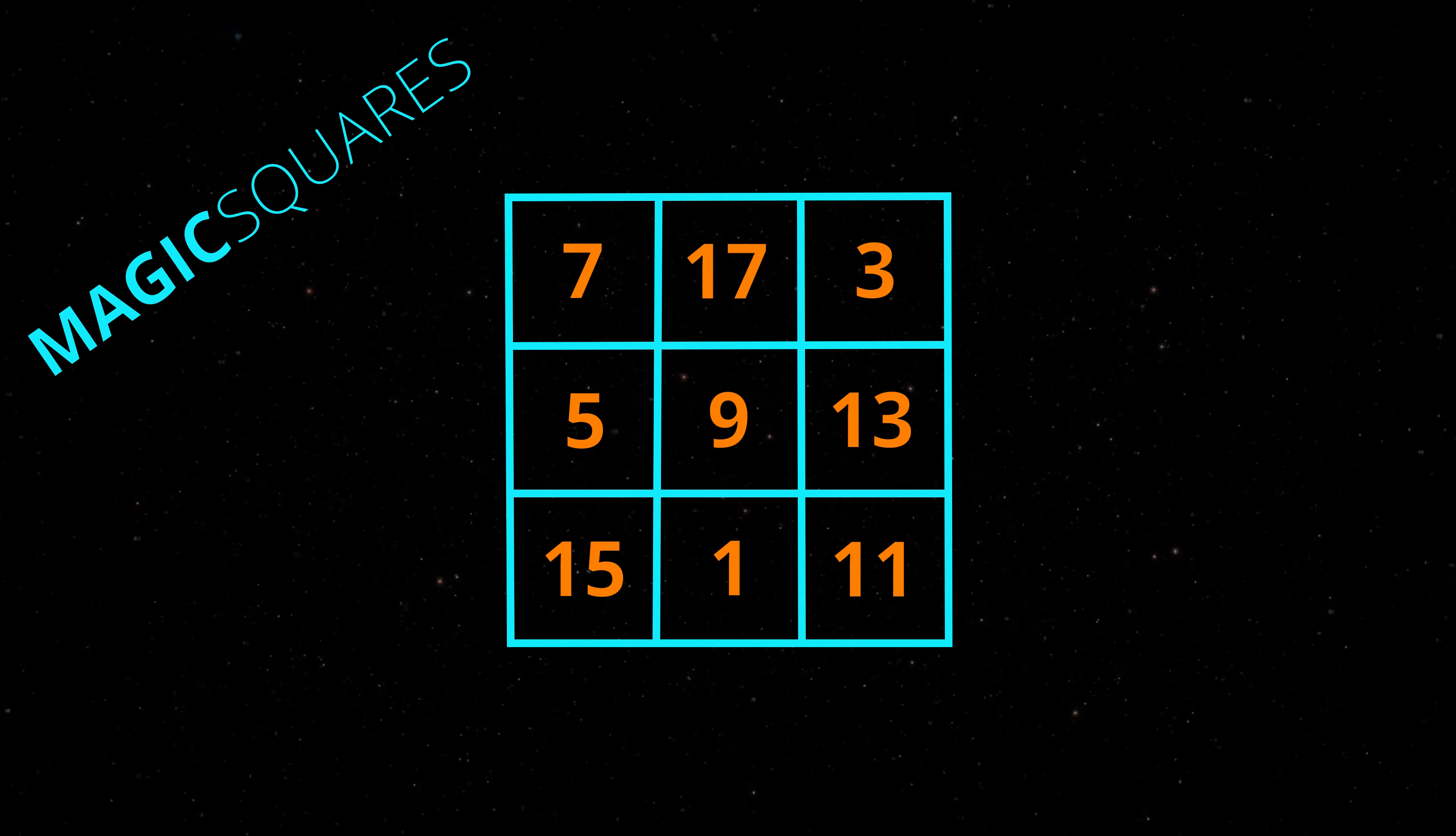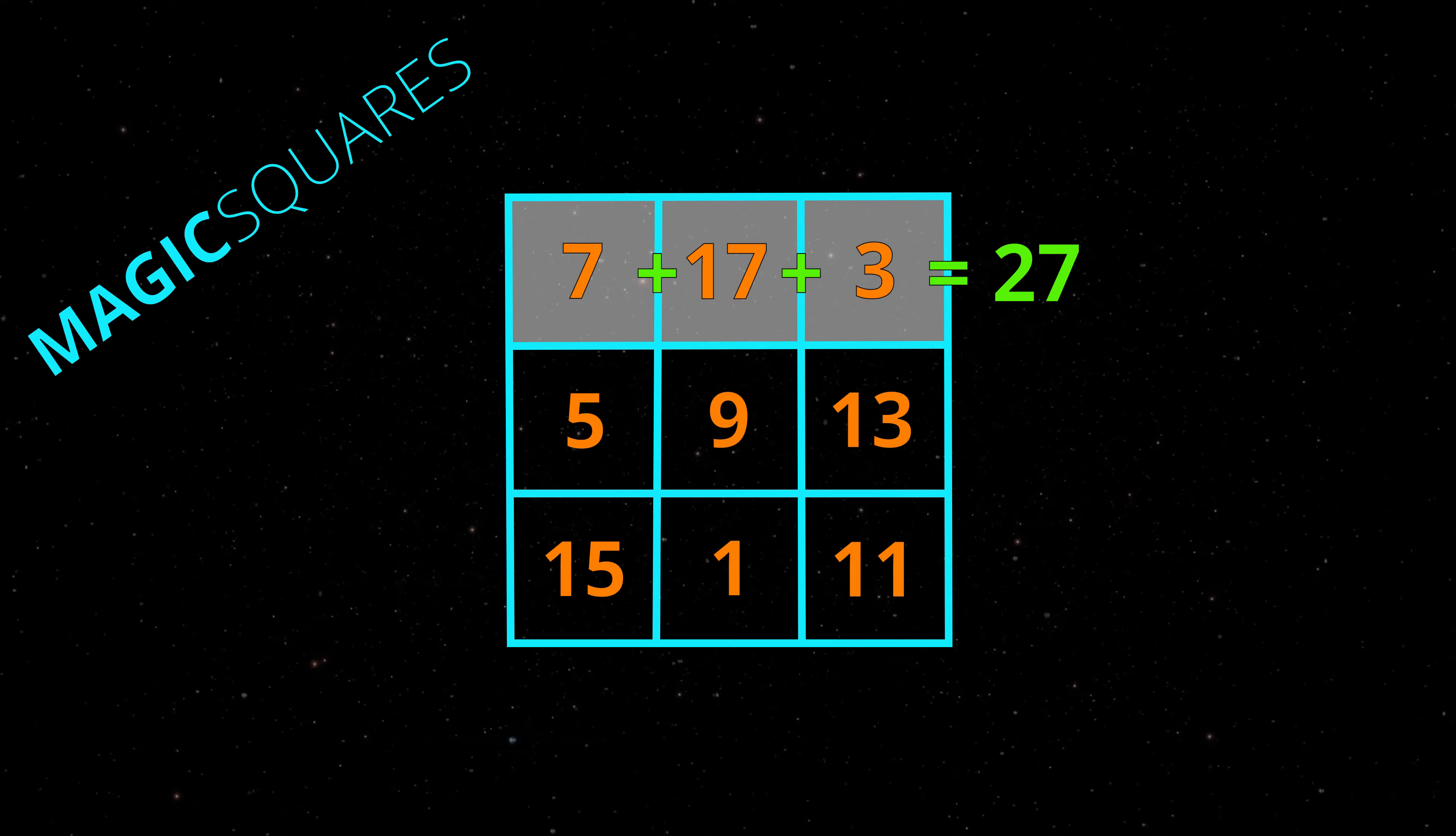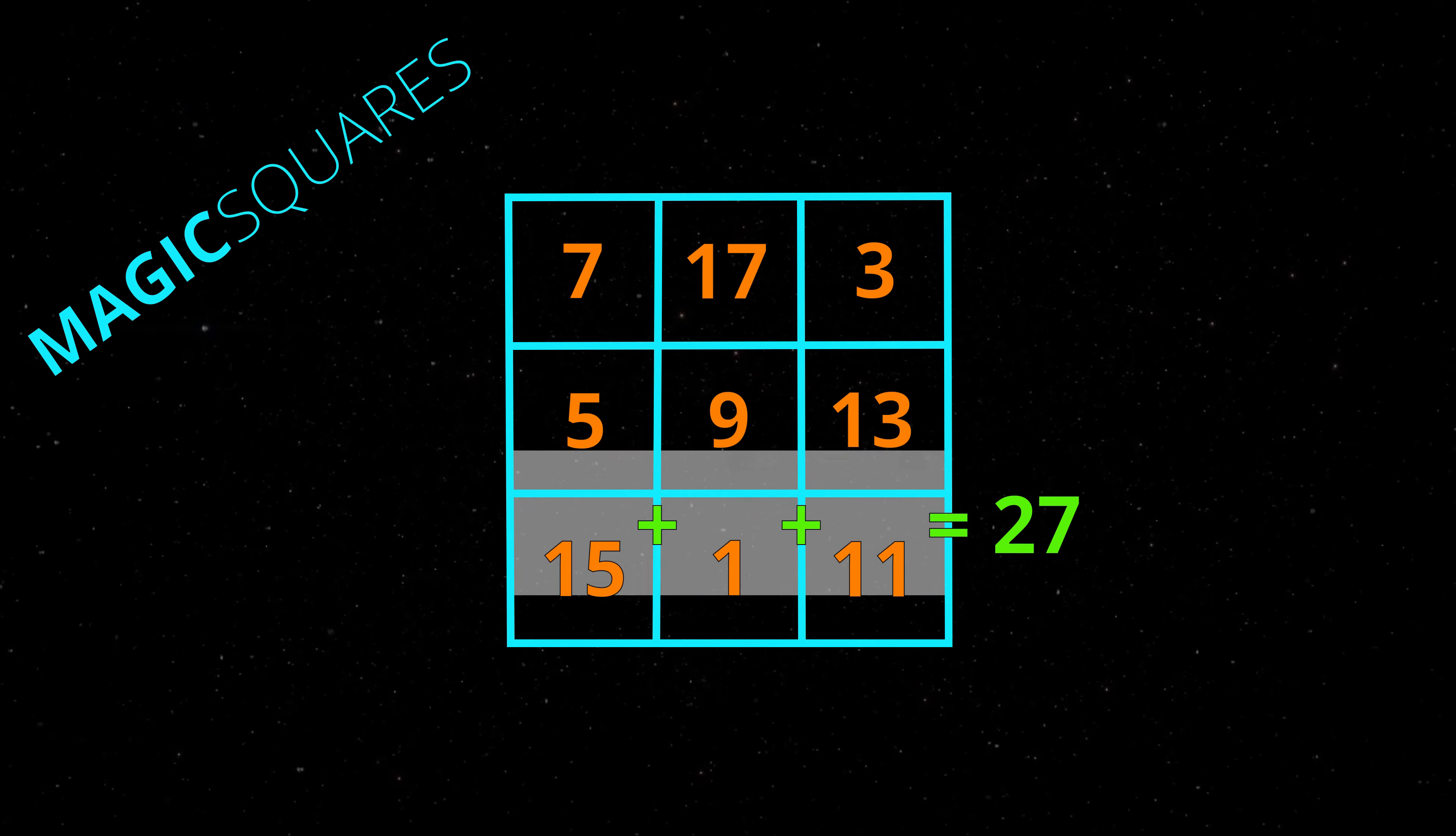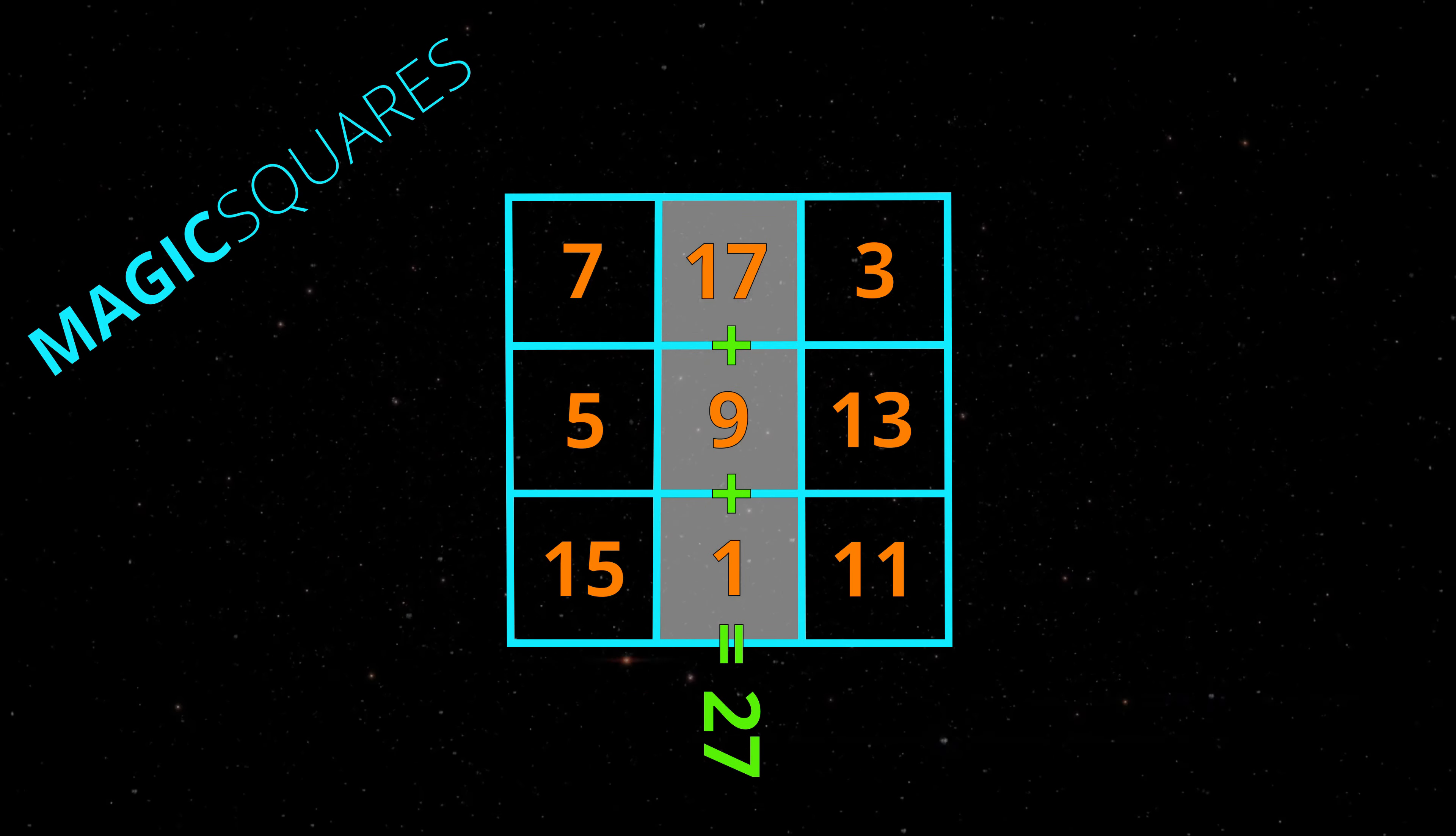Let's see another magic square. In this magic square, each row, each column, and each diagonal add to 27.